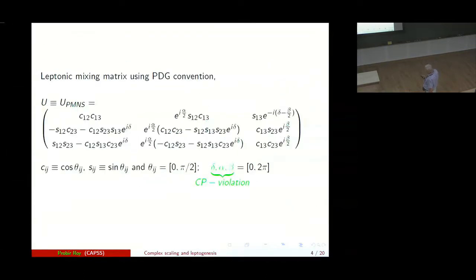And the unitary mixing matrix is now precisely the PMNS matrix where the mixing angles theta_12, theta_23 and theta_13 are defined between 0 and 90 degrees, whereas the CP violating, the Dirac CP violating phase delta and the Majorana CP violating phases alpha, beta, they're all defined between 0 and 2 pi.